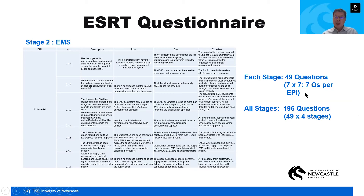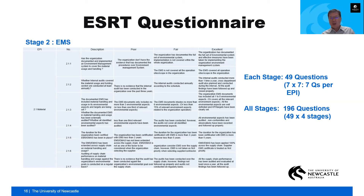Each stage has seven EPIs and seven questions per EPI, giving 49 questions per stage. Across four stages that totals 196 questions — approximately 200 questions in the entire ESRT questionnaire set. We can extract information from sustainability reports to populate the scores, but ideally we get the manager to fill it up, and if possible conduct a one-to-one interview to populate the database directly.